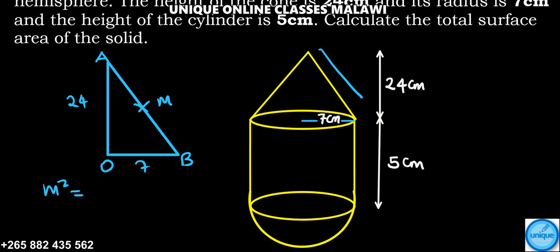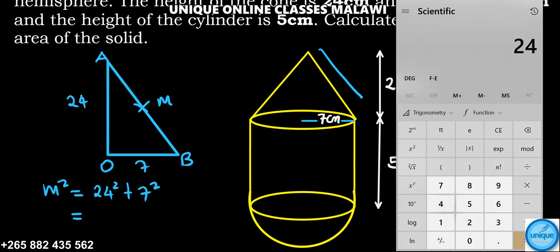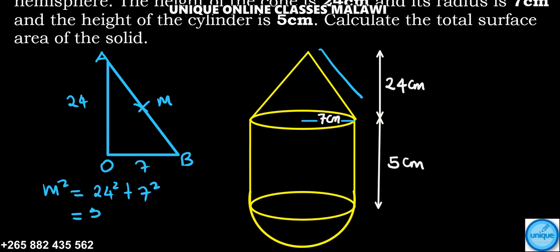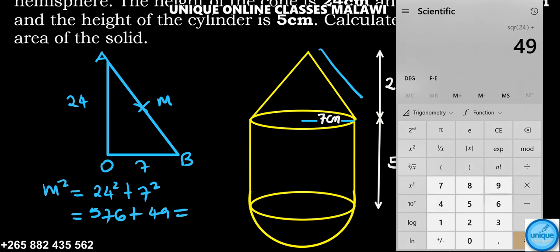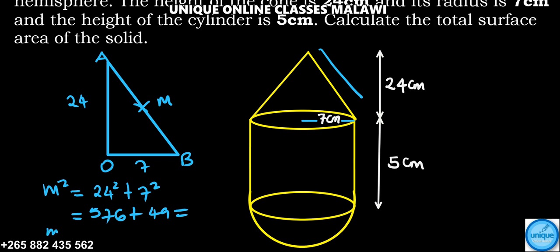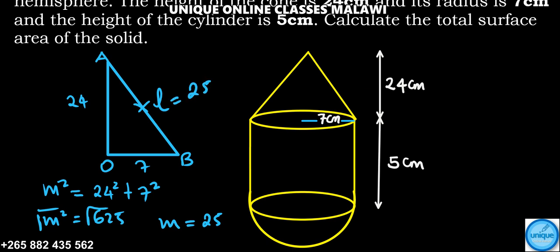To find l, l squared is equal to 24 squared plus 7 squared. 24 squared is 576, and 7 squared is 49. The sum of this is 625, so l squared equals 625. Square root both sides - the value of l is 25. So l is 25 centimeters, that is 25 centimeters there.